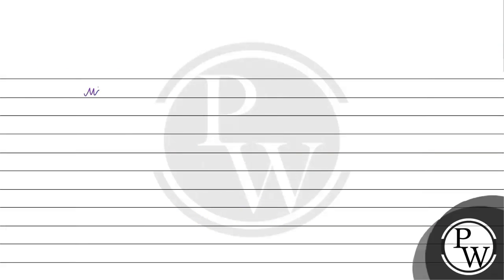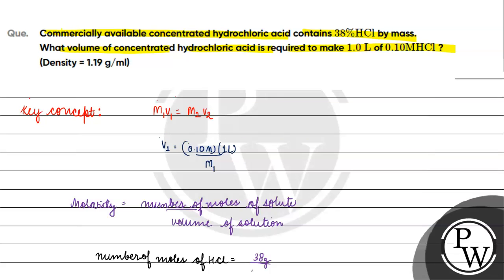M1 is given by mass. If we have mass of solution — say mass of solution is 100 grams — then in that 100 grams we have mass of HCl, which will be 38% of 100 grams, which is 38 grams. We will divide it by the molar mass: 36.5 grams per mole — chlorine atomic mass 35.5 plus H is 1 gram per mole, i.e., 36.5 grams per mole.